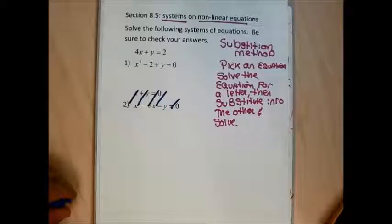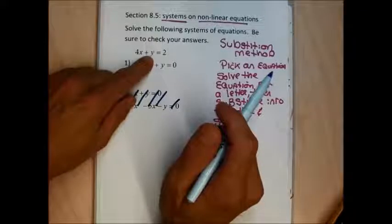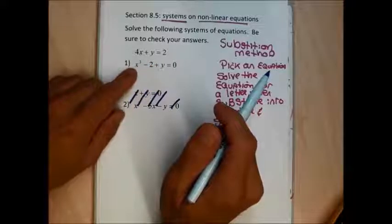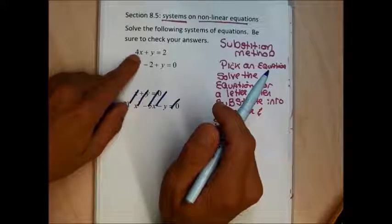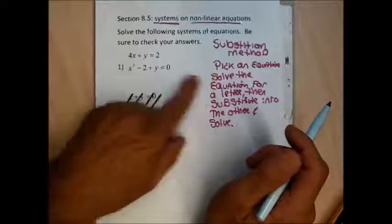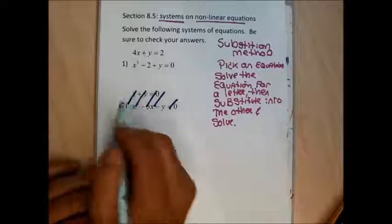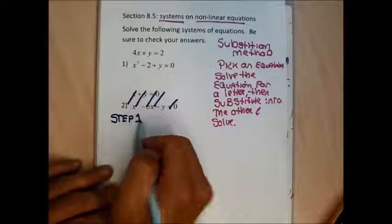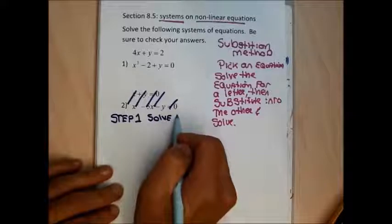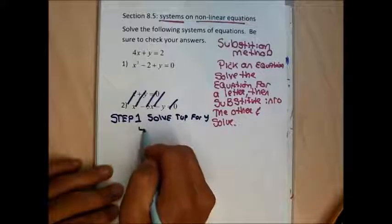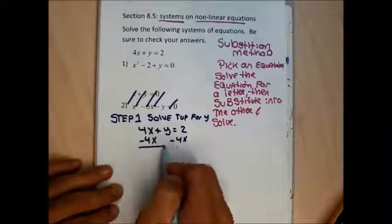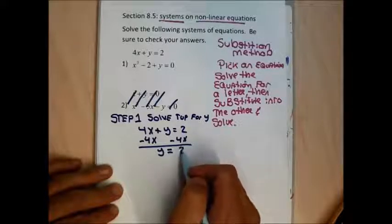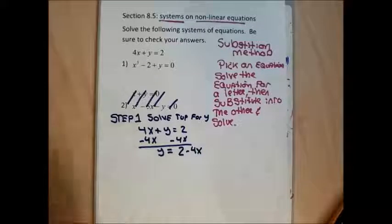I need to pick an equation and solve it for a letter. Picking the top equation: it's not particularly hard to solve for y, nor is it particularly hard to solve the bottom for y. Solving the bottom for x would be tough because x has a cube. Solving the top for x would be tough because I'd have to divide by 4, introducing fractions. Both equations are easy to solve for y, so I'm going to solve the top equation for y: 4x + y = 2, then minus 4x from both sides gives y = 2 − 4x.